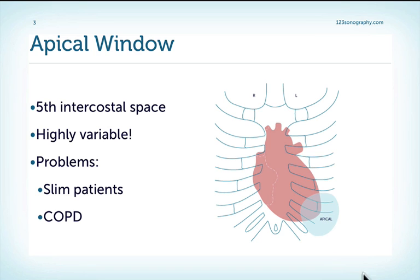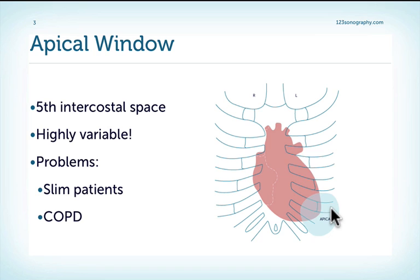Where is the window located? It's located at the apex, which can be very variable. Usually it's somewhere in the region of the 5th intercostal space, but it can be located further up or sometimes even further down, and the apex can also be rotated more towards the back or even more towards the sternum. So there's a high variation, and you will have to just play around with the transducer until you find where the apex is.